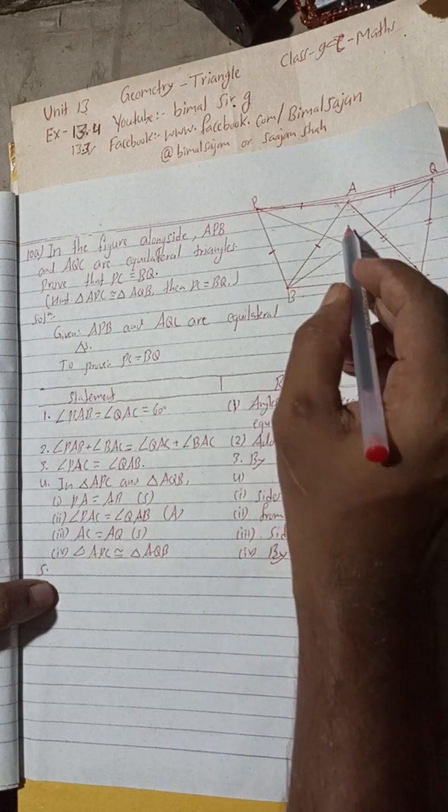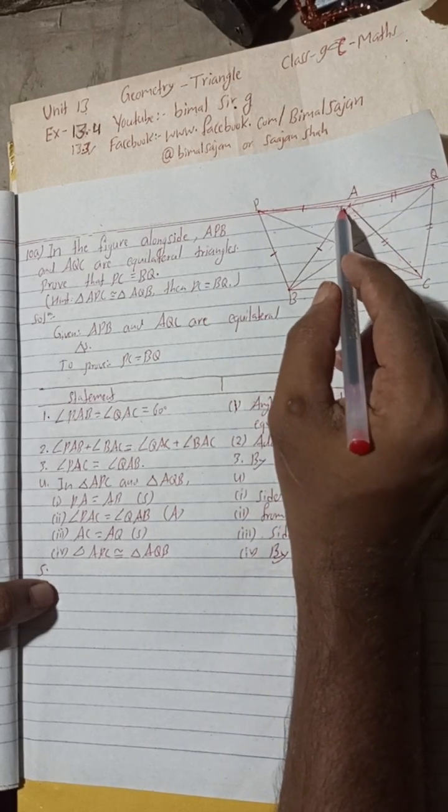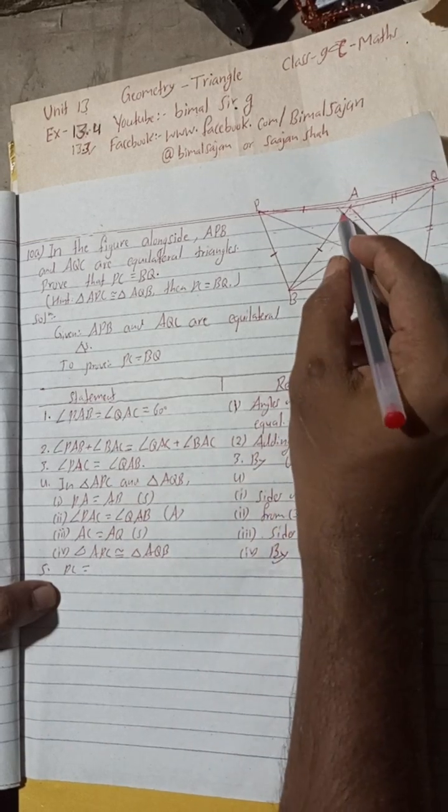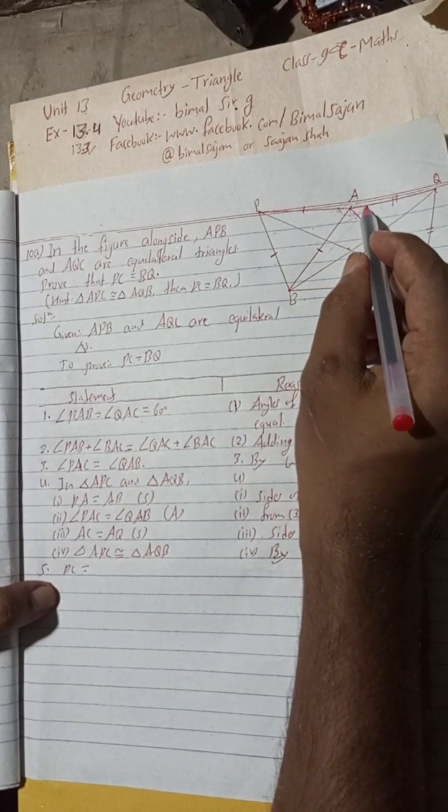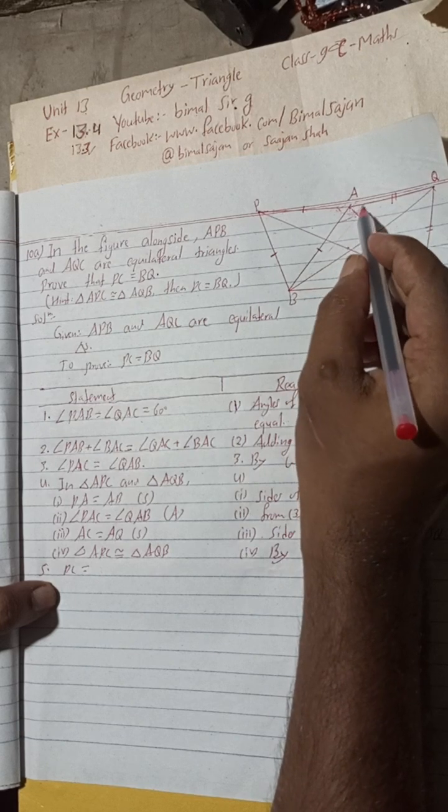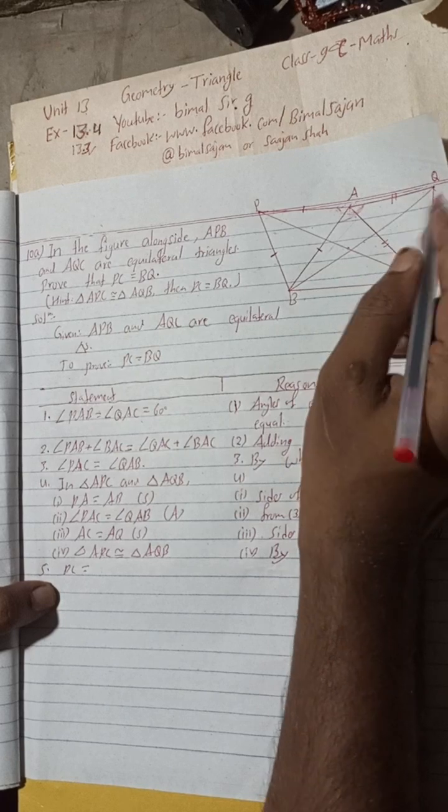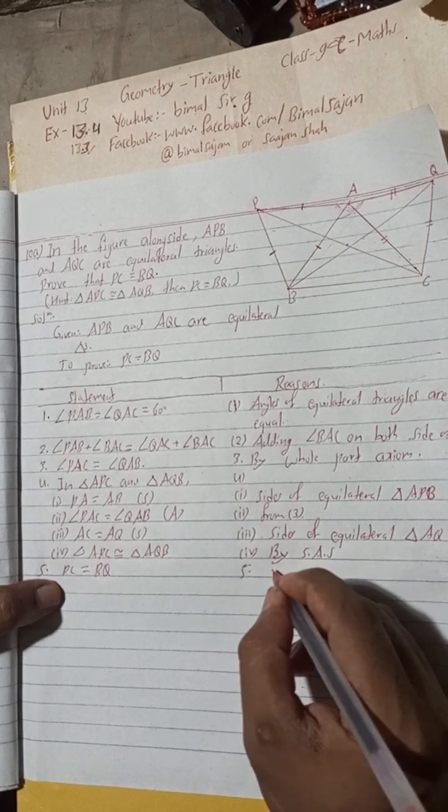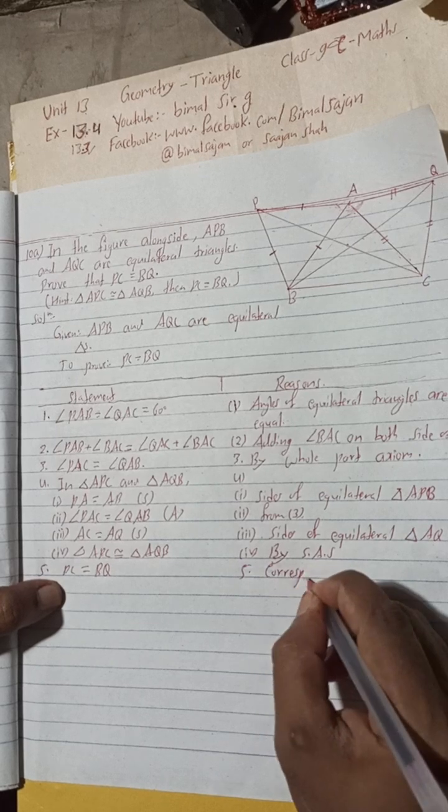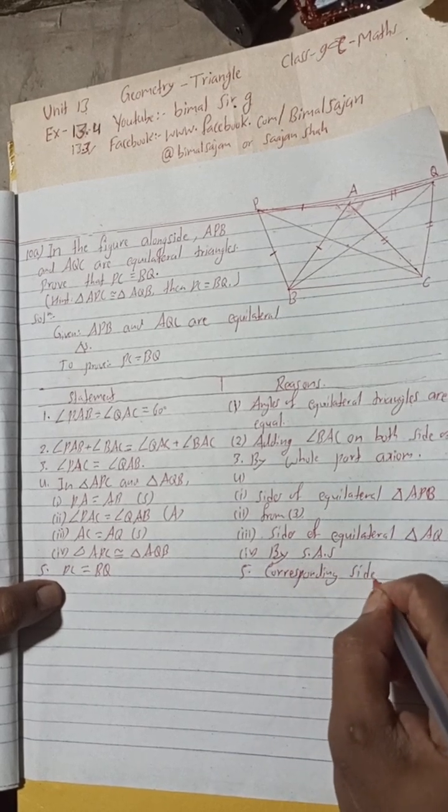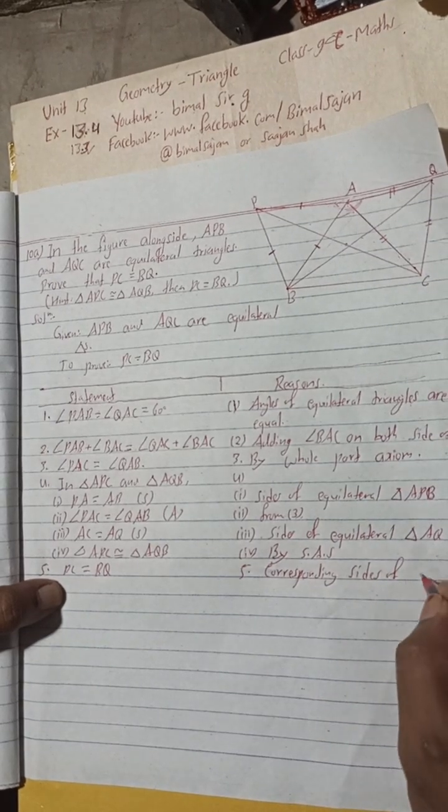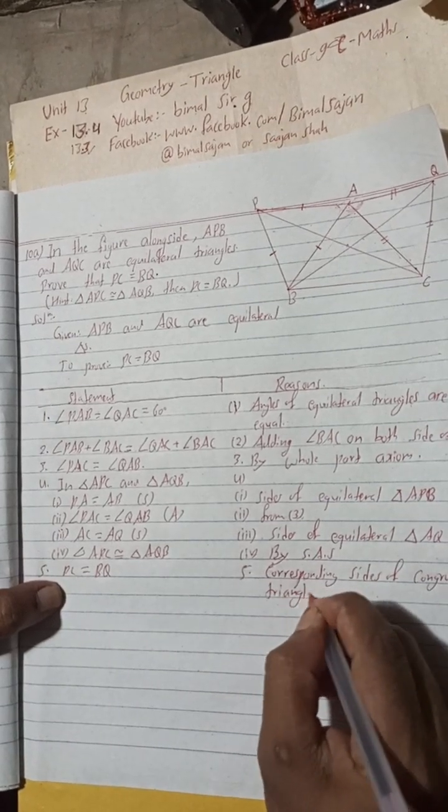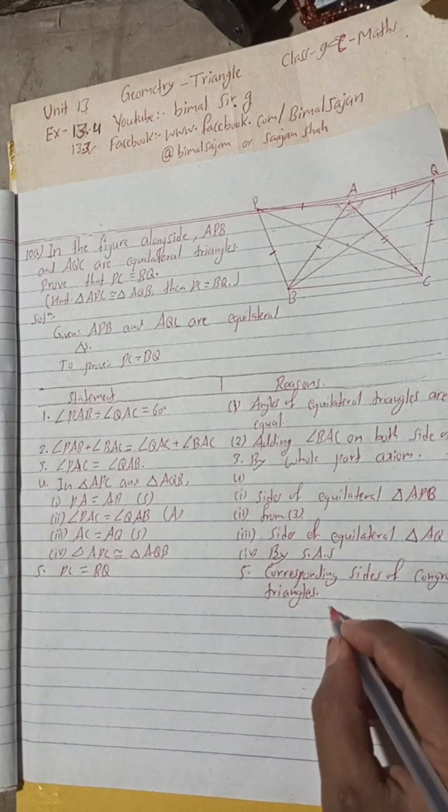Now, number five: The triangles are congruent by side-angle-side. Now we can write: the corresponding side with respect to this angle is PC, and the corresponding side with respect to this angle is BQ. So PC is equal to BQ. This is corresponding sides of congruent triangles. So this is proved.